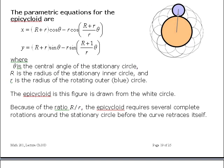Now I'm just going to present and not derive the equations for the epi and the hypocycloid. So here are the equations for the epicycloid. The parameter is the angle theta. For the epi and hypocycloid, you have two rolling circles. So theta is taken as a central angle of the stationary circle, not the moving circle in this case. Big R is the radius of the stationary inner circle. Little r is the radius of the outer rotating blue circle in this diagram.